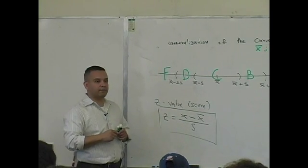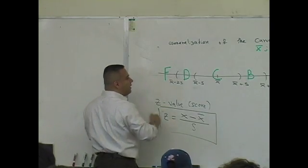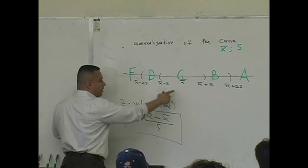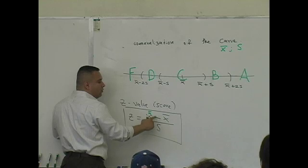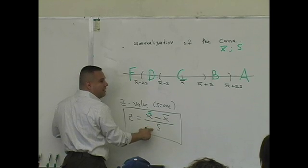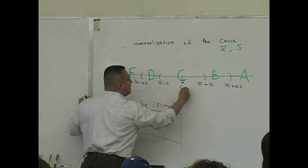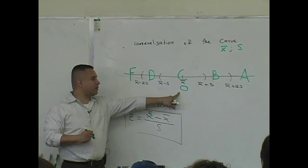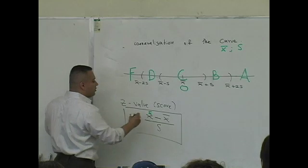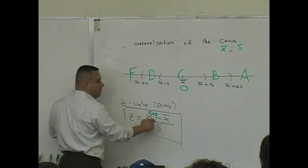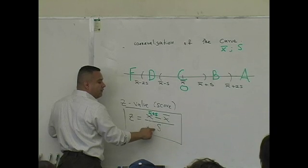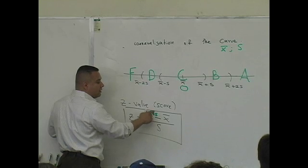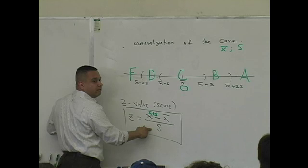Here's how this works. If I plug in the mean for X — the mean minus the mean is zero, divided by any number is zero. So when we standardize this scale, the mean is always zero. If I plug in mean plus one standard deviation, the means cancel and you get one standard deviation divided by one standard deviation, which equals one.